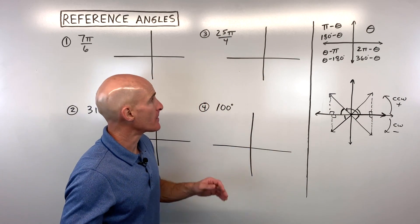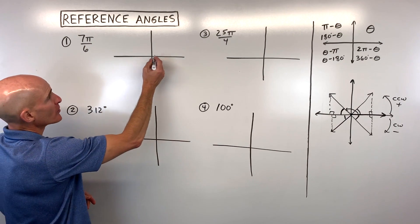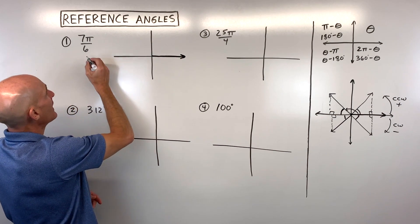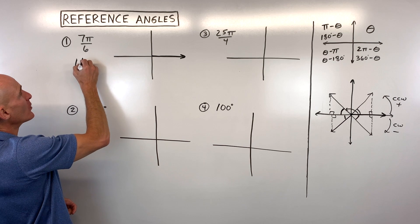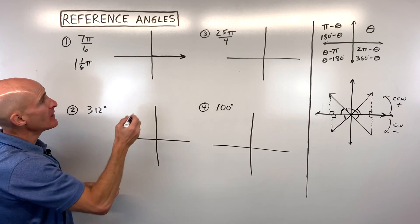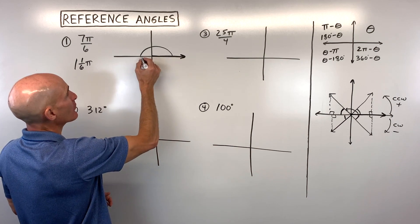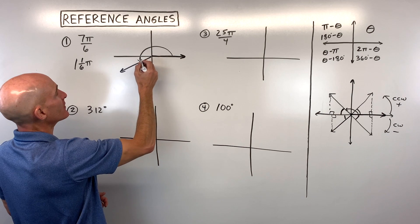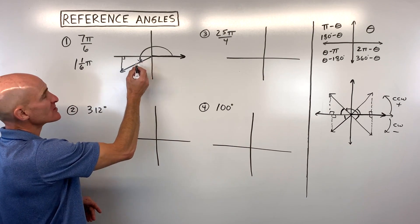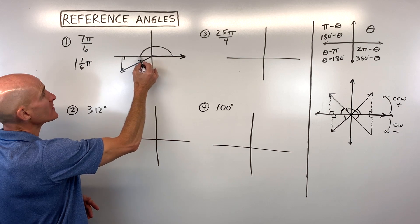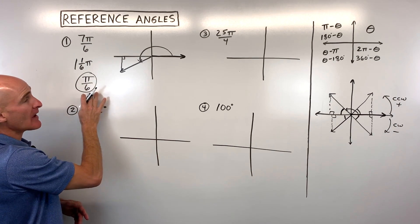Let's look at some examples. Say 7 pi over 6. First, figure out where 7 pi over 6 is. We start along the positive x-axis. Since it's an improper fraction, convert it to a mixed number: 6 goes into 7 once with 1 left over, so this is 1 and 1/6 pi. Pi is like 180 degrees, then we go another 1/6 of pi — that's our terminal ray. We drop a perpendicular to the x-axis, and the reference angle is pi over 6.